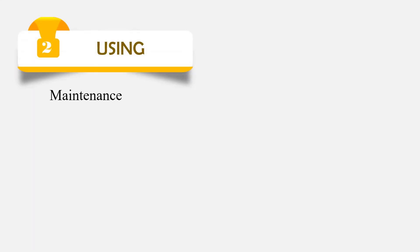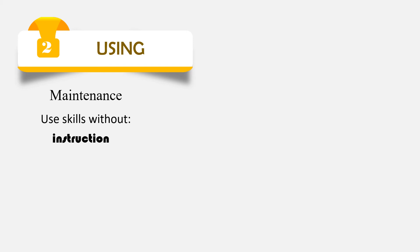The second one is the using stage of learning: maintenance. When a student continues to use the skills thus acquired with proficiency and automaticity over time, without explicit instruction, coaching, prompt, help or reinforcement, then maintenance is achieved.